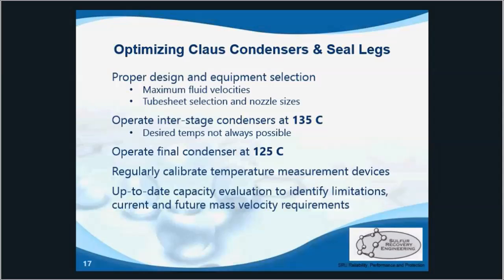The most important factor in designing sulfur condensers is the velocity of the process stream. Capacity evaluations by way of VMG simulation software can identify limitations like this, and the optimal mass velocity through the condenser process tubes. If velocities are too low, sulfur fogging can occur, and if they are too high, sulfur reentrainment can occur — and both of those can lead to carryover.